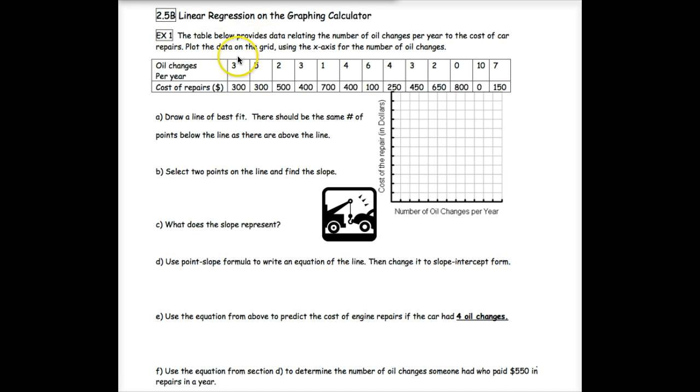First thing it wants us to do is plot the data on the grid. The x-axis is the number of oil changes. I've already got the axes labeled for you, but we need to pick a scale. The data is not in order, but the lowest number I see on oil changes is 0 and the highest is 10. On my y-axis, which is the cost of repairs, I need to look and see what my highest value is. It looks like 800 is the highest value.